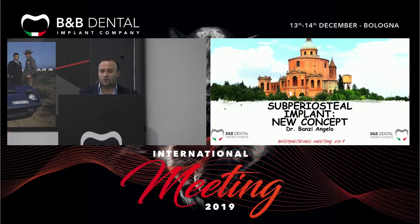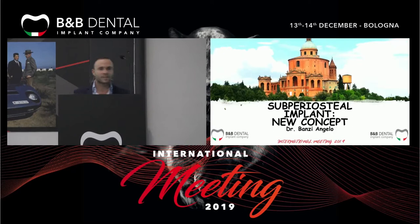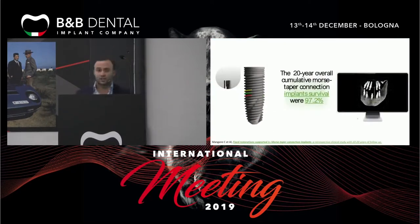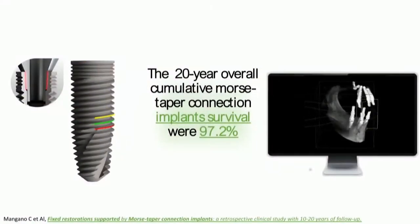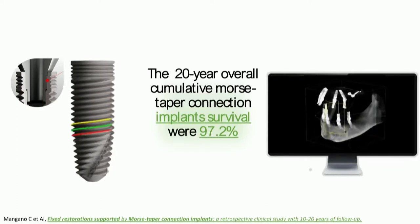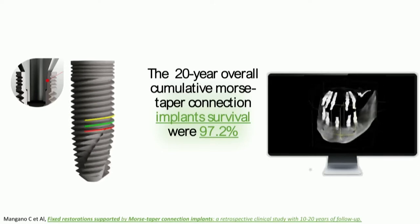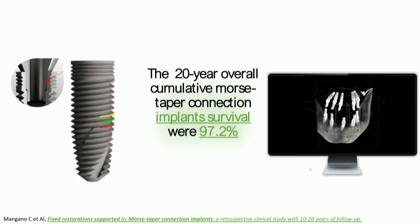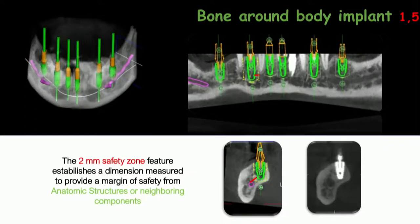Dental implants provide a predictable solution for prosthetic rehabilitation of edentulous patients, with a high rate of success in the medium and long term. Implants with a conical connection have a success rate around 96% after 20 years. To place these implants, an adequate quantity and quality of bone is required — at least 1.5 mm of residual bone around the implant body, and 2 mm of safety distance from anatomical structures and neighboring components.